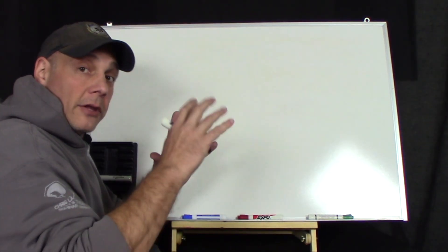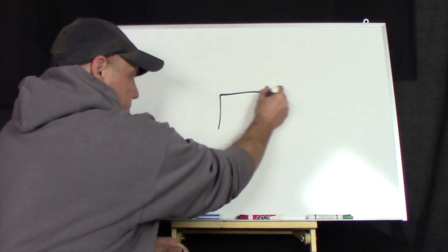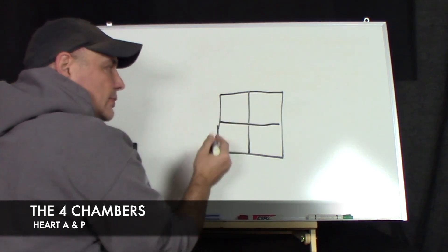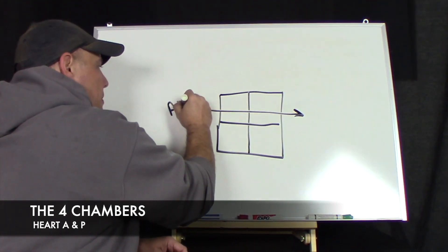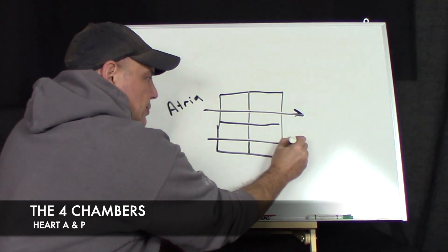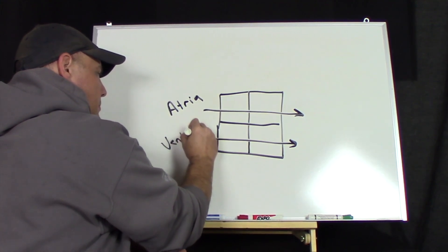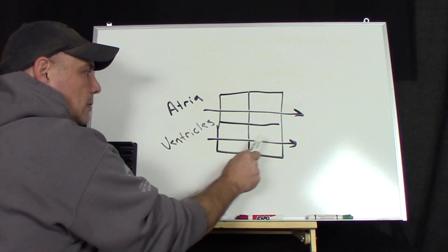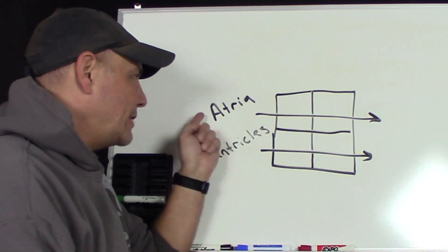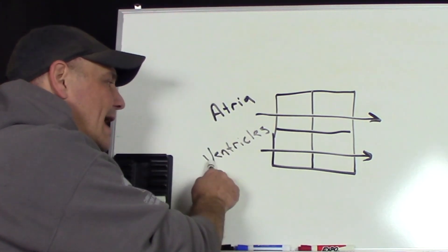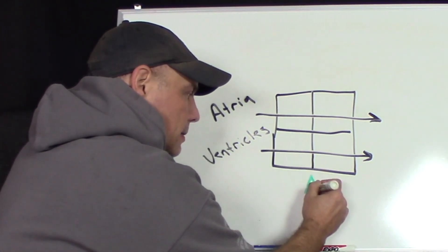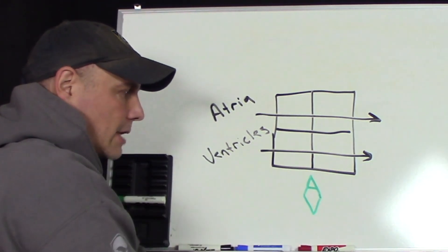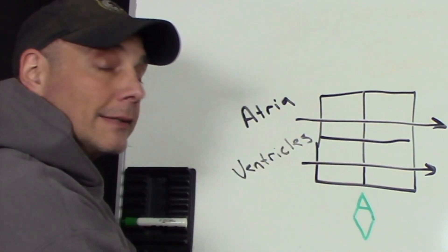So instead of looking at the heart like the shape of a heart let's look at it in the shape of a box. The heart has four chambers so we'll divide this into four sections. The top two sections are the atria. The bottom two are ventricles. So you have the right atrium, the left atrium, the right ventricle, and the left ventricle. How do we remember the atria are on top and the ventricles are on the bottom? If you take the A and the V and you just put them together they create a diamond. This diamond will tell you the atria are on top, the ventricles are on the bottom.